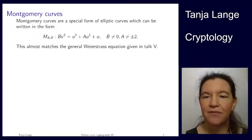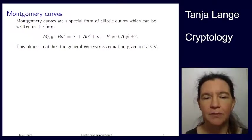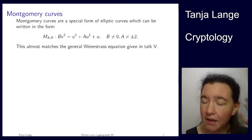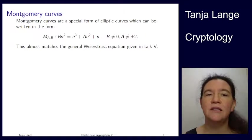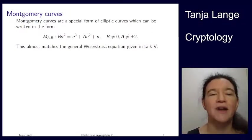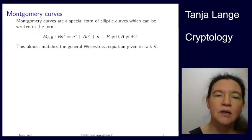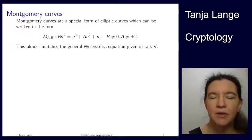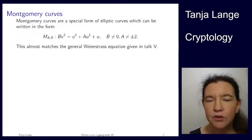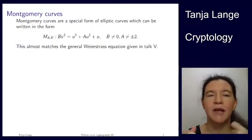We have already seen Weierstrass curves and Edwards and twisted Edwards curves as different shapes of elliptic curves. In this lecture we are going to see another important shape of elliptic curves, namely Montgomery curves. As you can see, Montgomery curves look almost like the general Weierstrass equation shown at the beginning of elliptic curve talk number five. The only difference is that there is an extra term in front of the quadratic variable. I'm using u and v here as coordinates because I want to show some maps between twisted Edwards curves and Montgomery curves.